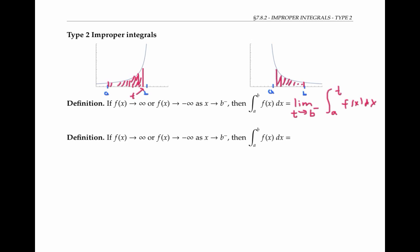we again want to take a limit of integrals over sub-intervals on which the function is finite. So in symbols, that says that if f goes to infinity or negative infinity as x goes to a from the positive side, then the integral from a to b of f(x) dx is going to be the limit as t goes to a from the right of the integral from t to b of f(x) dx.